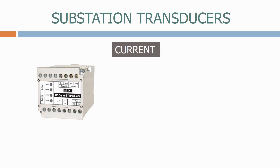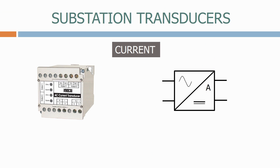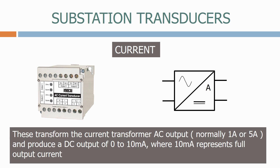Next, we have a current transducer. This is the symbol we normally use. These transform the current transformer AC output, normally 1A or 5A, and produce a DC output of 0-10mA, where 10mA represents full output current.